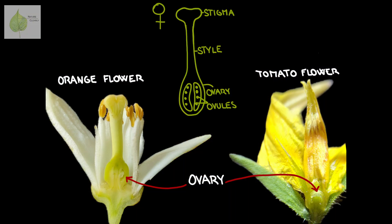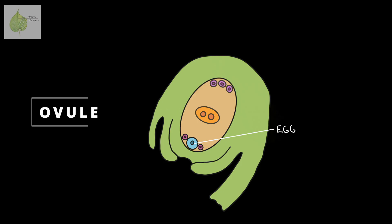The ovary is part of the female reproductive structure. Inside an ovary are these tiny specks which are the ovules. Each ovule has an egg inside and a tiny opening, called a micropile, through which a sperm cell from a pollen grain enters the ovule. If this process is successful and the sperm cell joins the egg cell, the ovule gets fertilized and develops into a seed.